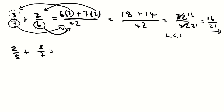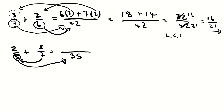Let's look at another example — you can try it yourself. Again apply the same rule: multiply the denominators 7 and 5, since they are different. 7 times 5 equals 35. Ask how many times 5 goes into 35 — it goes 7 times — so multiply 7 by the numerator 2 on top of 5. Then ask how many times 7 goes into 35 — it goes 5 times — so multiply 5 by the numerator 3 on top of 7.